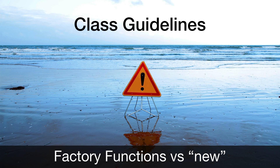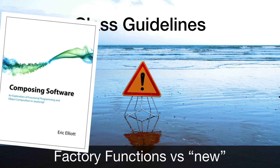Instead, the better guidance is to use composition. Composition is just a fancy math term for doing a mixin — a very simple way of taking some existing object and attaching functions onto it so it can use its own internal state. It also tends to be beneficial to utilize factory functions even if you're still going to use classes. Factory functions will avoid you having to hunt through your application to change where you 'new' things up if you switch to a mixin model.